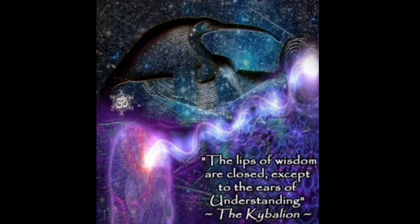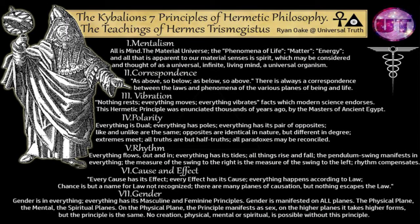According to The Kybalion, there are seven principles of Hermetic philosophy — the teachings of Hermes Trismegistus — and these principles are, according to the author, the basis of occultism. The first principle is the principle of mentalism, meaning all is mind. The material universe, the phenomena of life, everything around us, lives in our mind and in the mind of the Almighty.